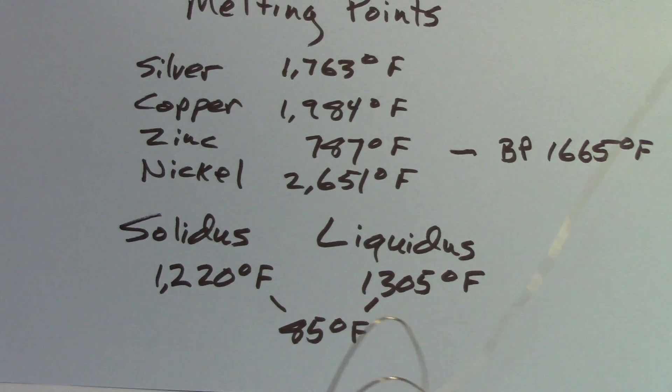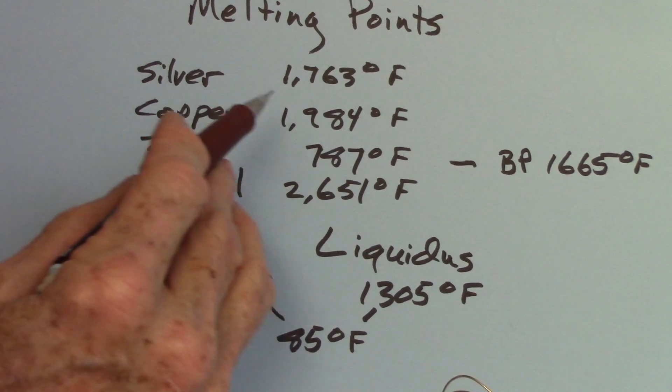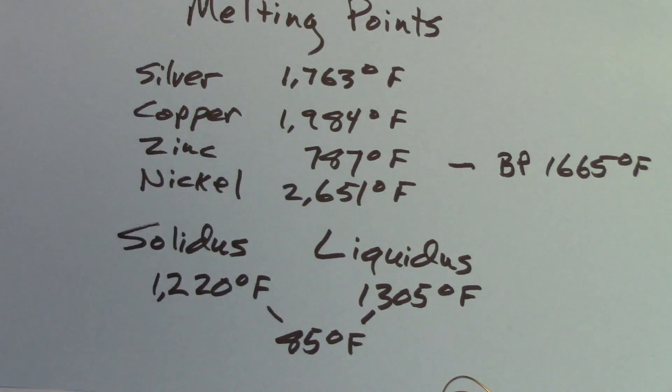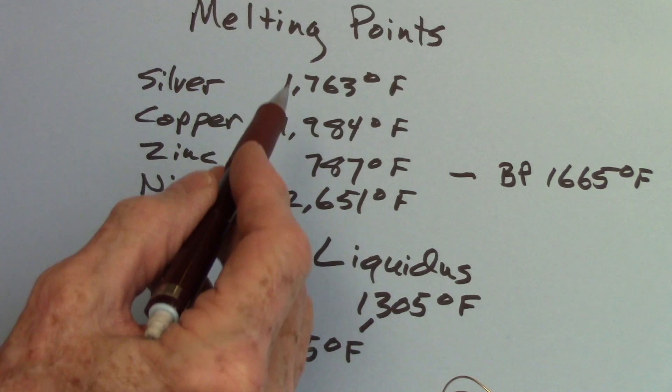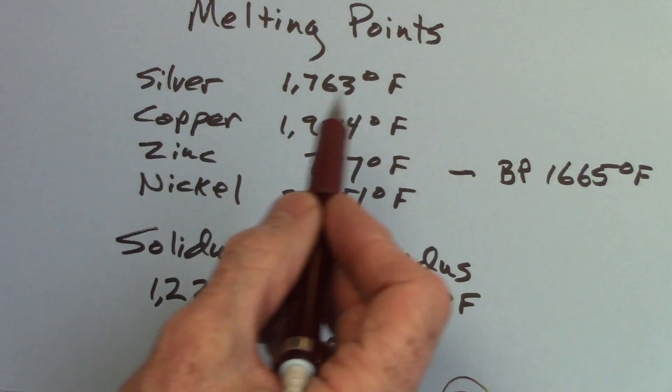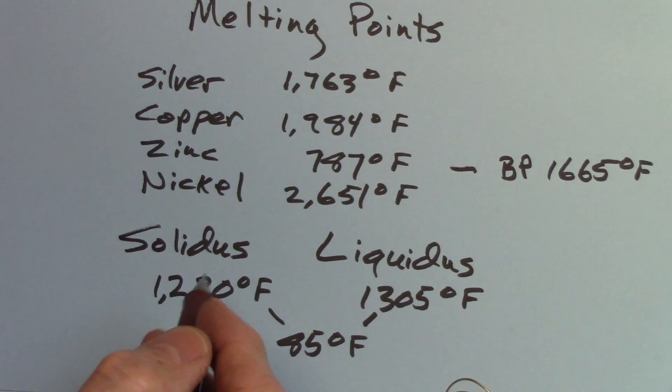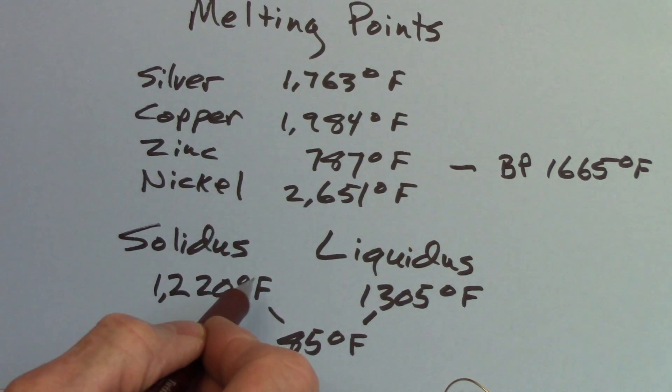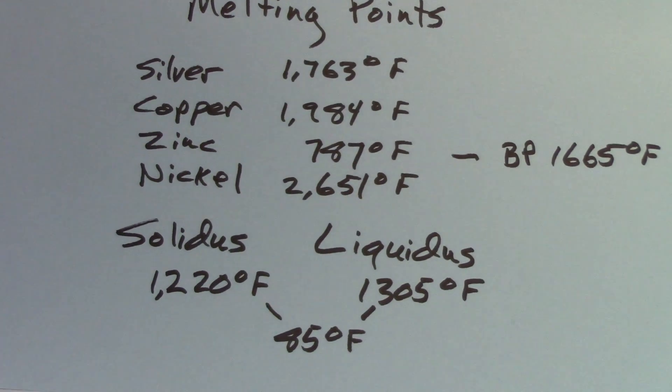Why do these alloys melt lower than the pure metals? Pure metals have one atom throughout the entire metal. It's just silver, or just copper, or just zinc, or just nickel—they melt specifically at these temperatures because they're the same atom throughout, creating a very strong bond. But if you have these mixed together, the atomic arrangement is less regular and the bonds between them are weaker. So the melting point is lower—it's easier to break down.